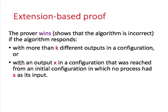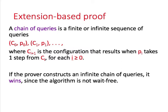The prover wins by showing that the algorithm is incorrect. One way the prover wins is if the algorithm responds with more than k different outputs in a configuration, violating agreement. Another way is if the algorithm responds with an output x in a configuration reached from an initial configuration in which no process had x as its input, violating validity. A chain of queries is a sequence of queries where the resulting configuration of one query is the input configuration to the next. A third way the prover can win is if the algorithm allows it to continue a chain of queries indefinitely, violating wait-freedom.